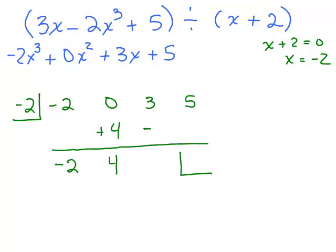4 times negative 2 is negative 8. That goes up here, right? You multiply what's in the box and put it at the next line under the next coefficient. So 3 minus 8 is negative 5. And you take this number and multiply by what's in the box. Negative 5 times negative 2 is 10. And I add and whatever ends up in the box, that is my remainder.